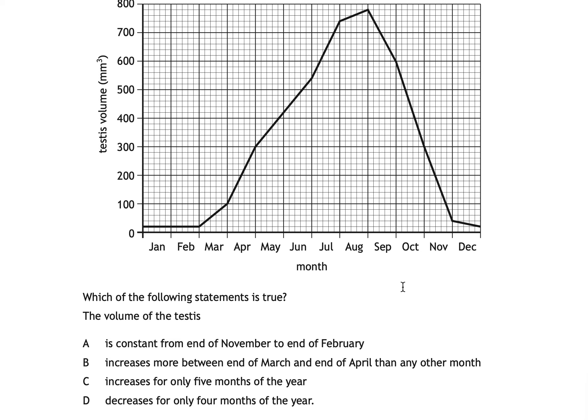For D, the volume decreases for only four months — September, October, November, and December — which is correct. For these graph questions, always go through each statement carefully. Even if you think A is right, double-check that the rest are also wrong.